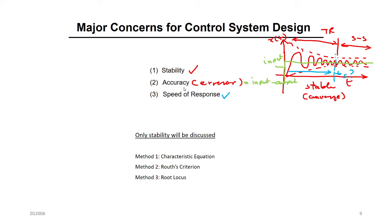Number two is accuracy — that means the error; you want to reduce the error. Number three is speed of the response — that means you want to have less settling time. The settling time is the time it takes to reach and stay within 2% of the final value. When you reach the steady state, we call this the speed of the response. Usually, you want to have a less settling time.